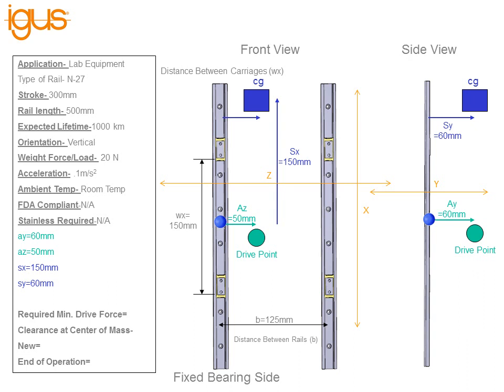The next dimension is the SY. Start at the zero point on the side view and move towards the center of gravity — that dimension is 60 millimeters. Last but not least we have the SZ. Start at the blue dot on the front view and move towards the center of gravity in the Z direction — that dimension is 50 millimeters.